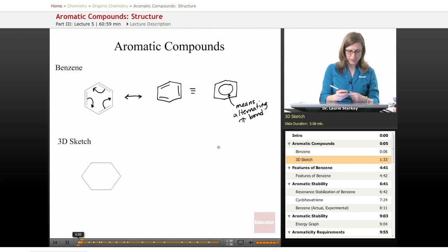If you look at a 3D sketch of benzene, you know that each pi bond comes from the overlap of p orbitals. So we can show one Lewis structure like this where we have one pi bond here and another pi bond here and another pi bond here.